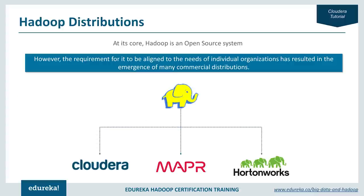Hadoop is an open source distributed processing framework owned by the Apache Software Foundation, also referred to as the vanilla version of Hadoop. On top of this vanilla version, we have various distributions like Cloudera, MapR, and Hortonworks. To understand why we need distributions, consider the example of Linux — GNU Linux is the base, and then we have different versions like Fedora, Ubuntu, CentOS, Red Hat, Mint, and Kali.